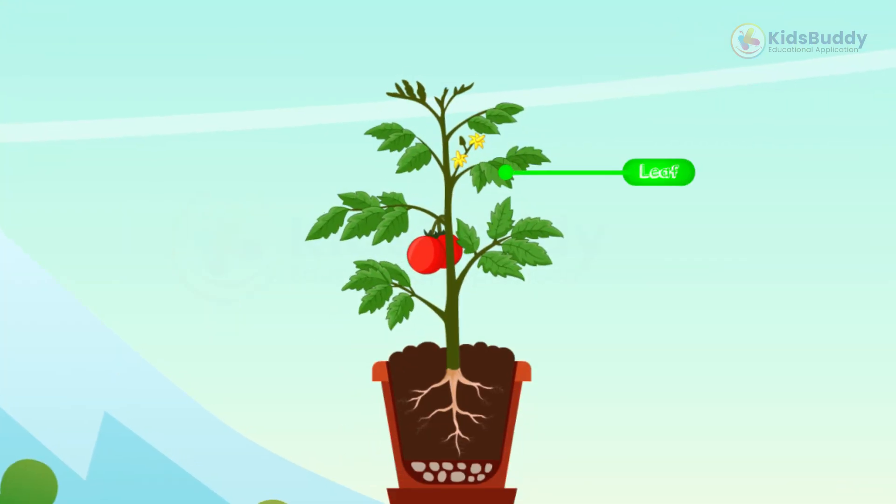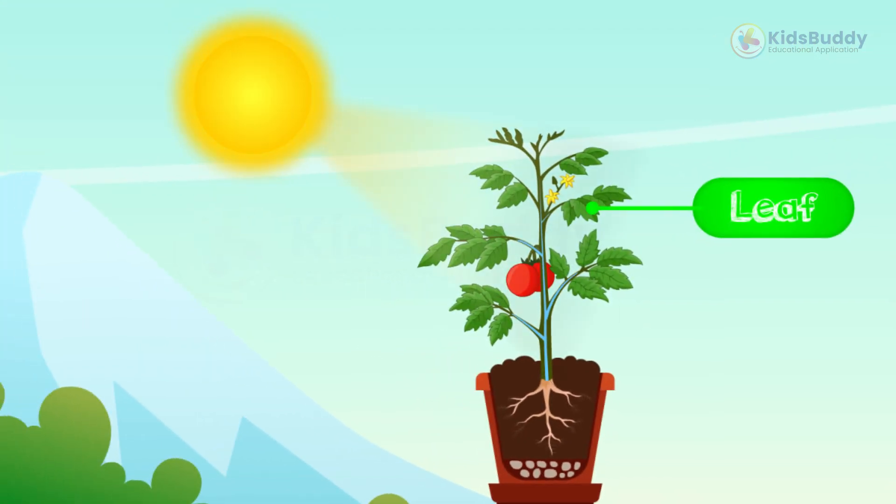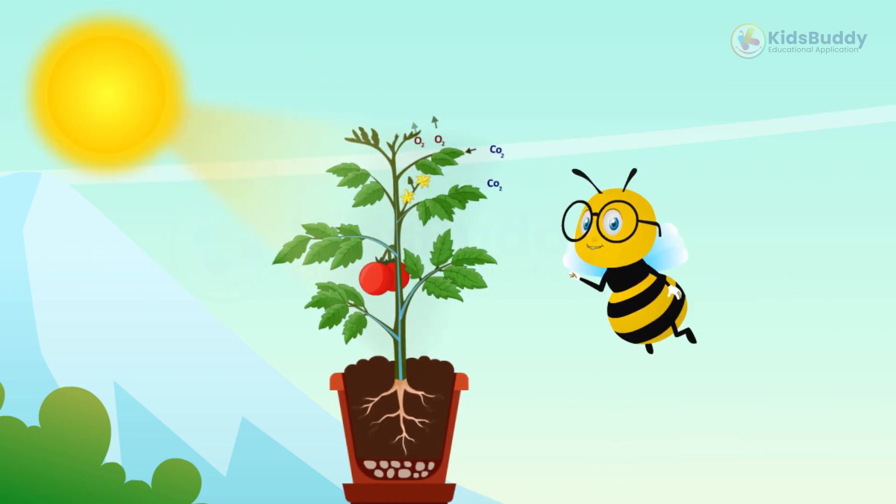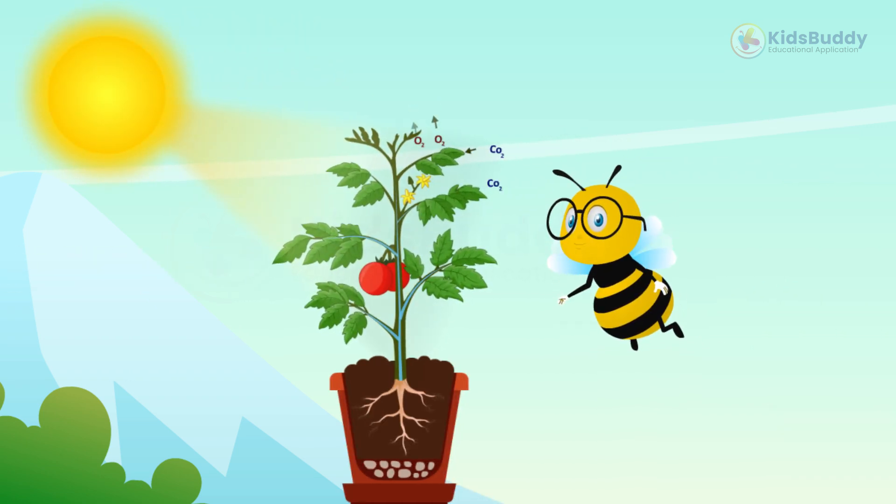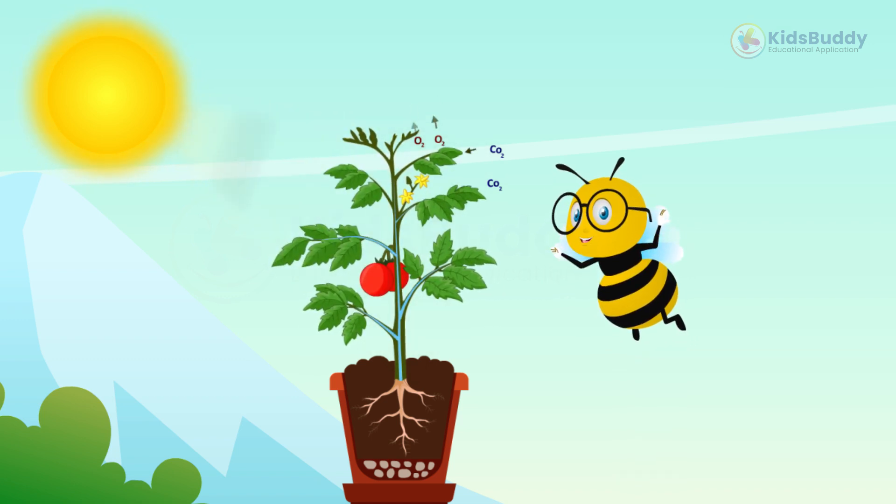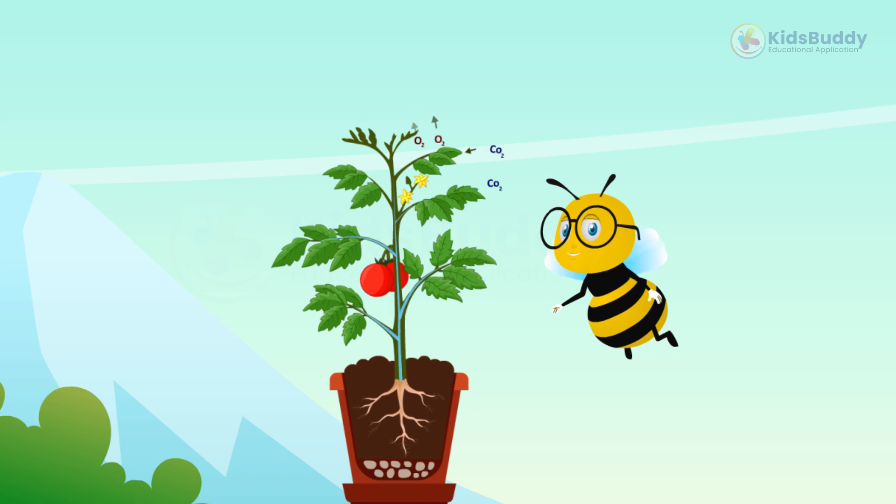Leaves are responsible for producing food for the plant through the process of photosynthesis. They take in carbon dioxide from the air and, using sunlight, convert it into oxygen and sugar, which the plant uses for energy.